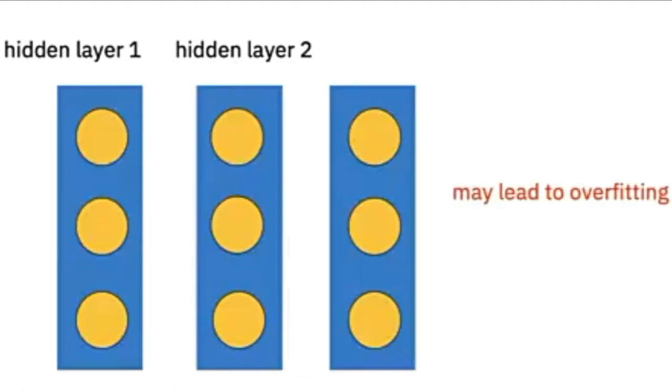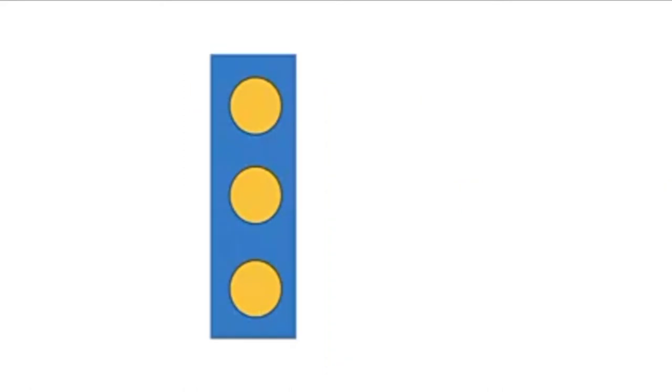More neurons or more layers may lead to overfitting. The output or activation of each layer is the same dimension as the number of neurons. This layer has three neurons. The output or activation has three dimensions.